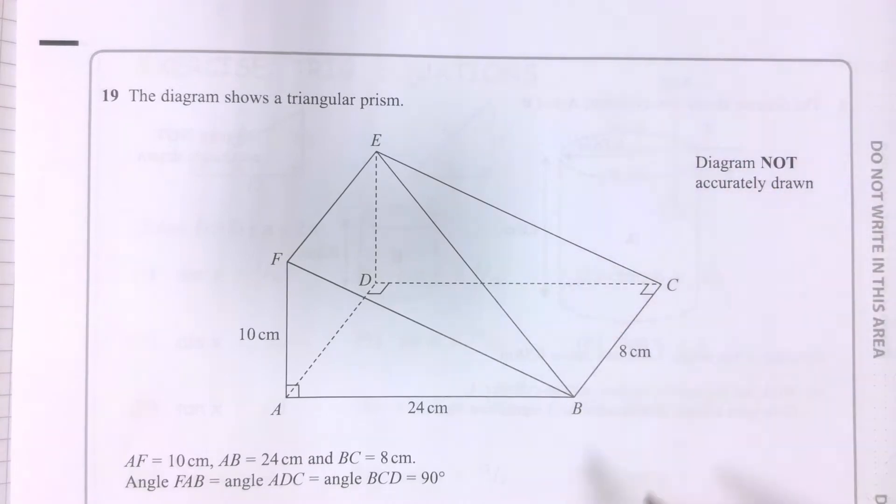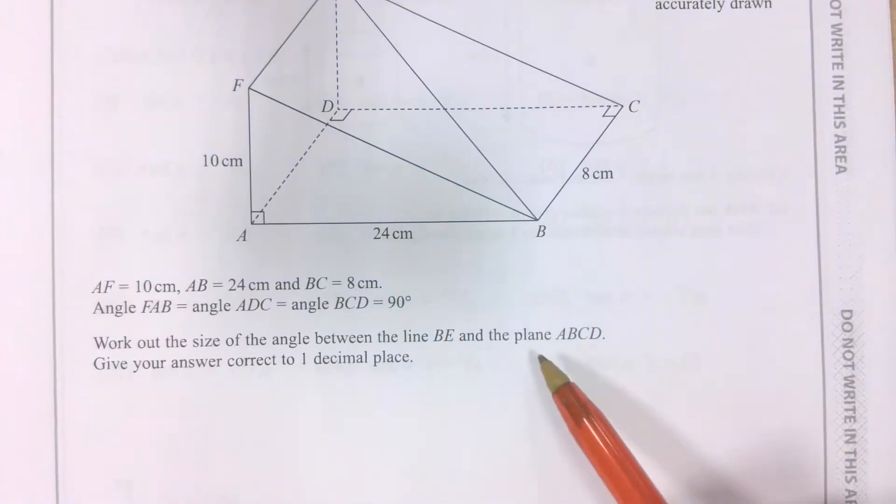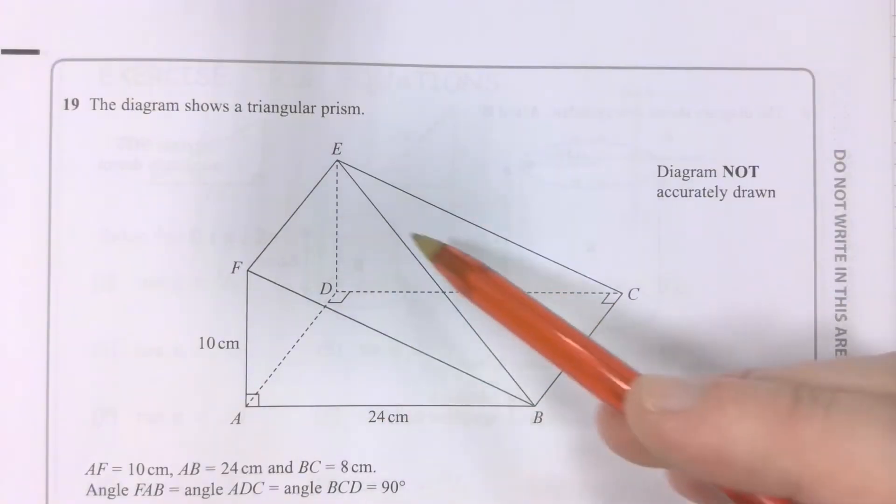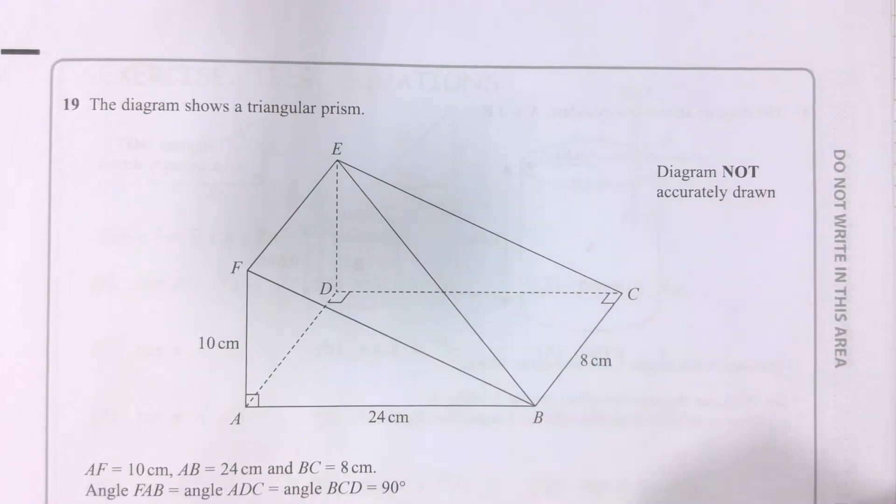This diagonal across that sloping downwards face of the triangular prism. The plane ABCD, that's funny wording, but effectively what it means is, if this was a triangular prism set on the floor, ABCD, this rectangle here, would be directly on the ground.